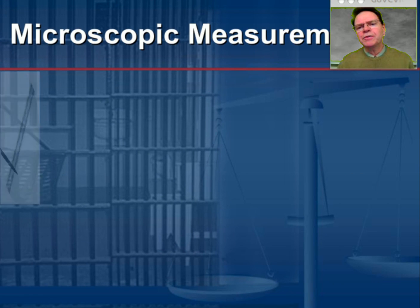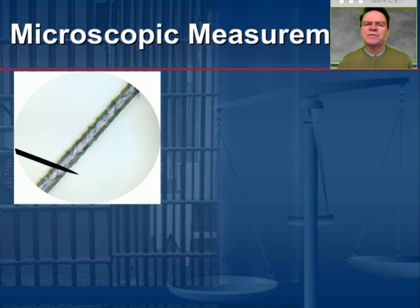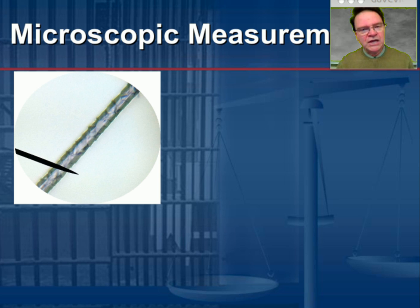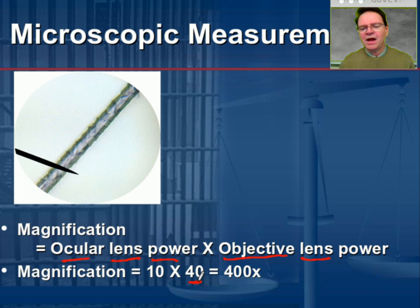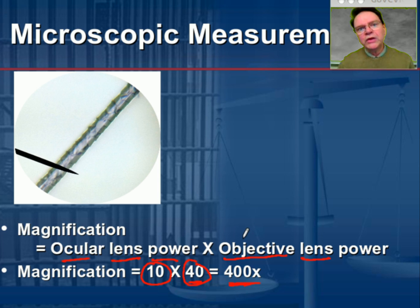Now we move to the topic of microscope measurement. When we look at something under the microscope, we ask: how big is that? With an optical microscope, we're dealing with two sets of lenses in combination. To answer that, we look at total magnification — the ocular lens power multiplied by the objective lens power. For example, a 40-power objective lens times a 10-power ocular lens gives 400x total magnification, meaning we're viewing an image 400 times larger than the actual specimen.